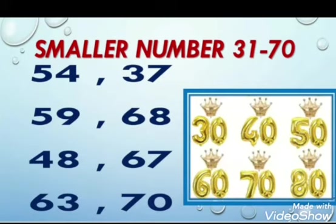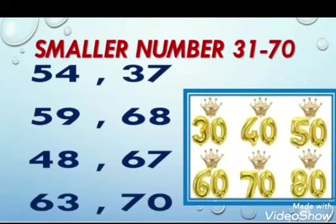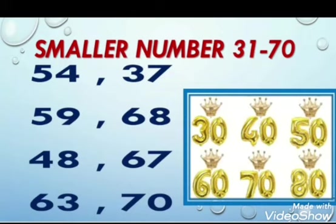Look at another example — which is the smaller number: 63 or 70? Tens are also different here. In 63, six is tens; in 70, seven is tens. We will read the tens: 30 — no; 40 — no; 50 — no; 60 — yes! 60 is in this example. So 63 is the smaller number than 70.